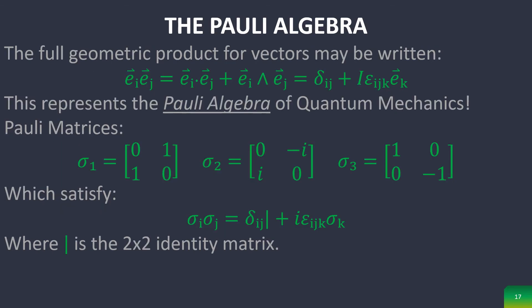And the last interesting thing about G3 algebra is that the full geometric product for vectors in this space may be written in the following form, which, if you may notice, is the Pauli algebra of quantum mechanics, which gives the Pauli spin matrices as follows, which satisfy the following equation right here.